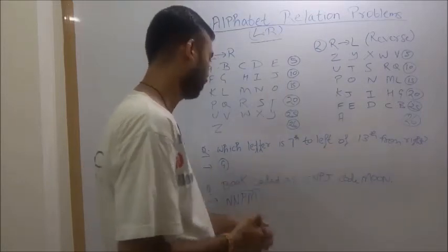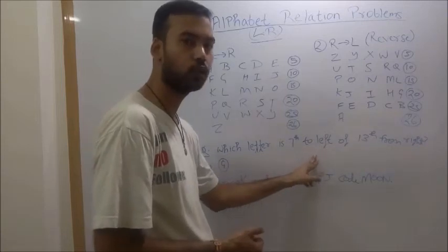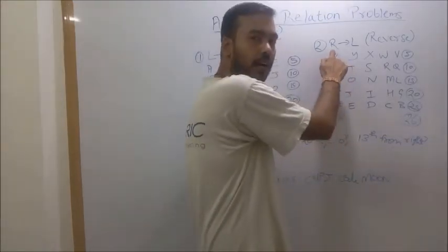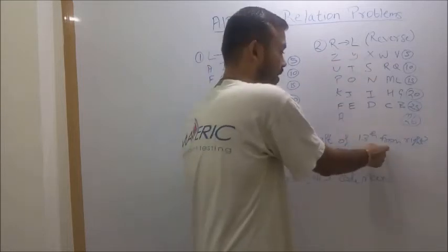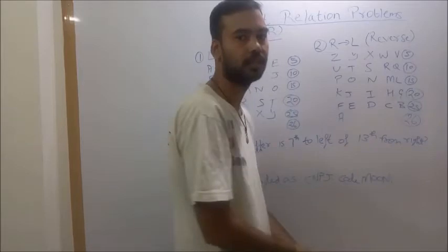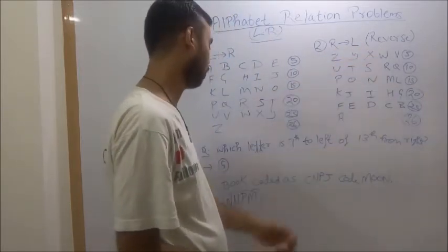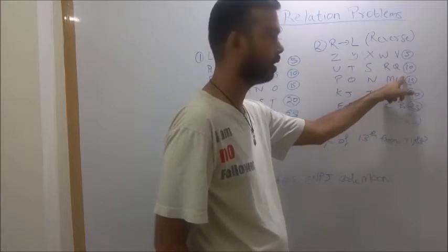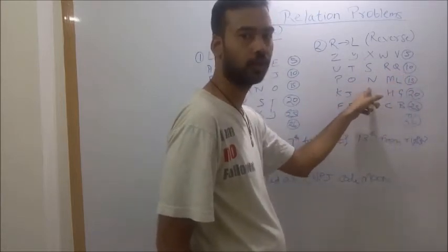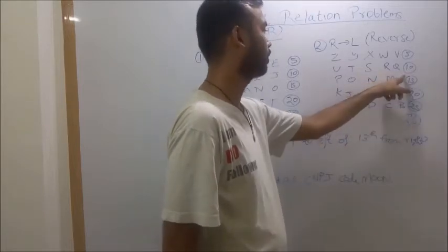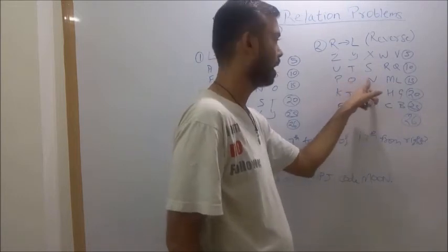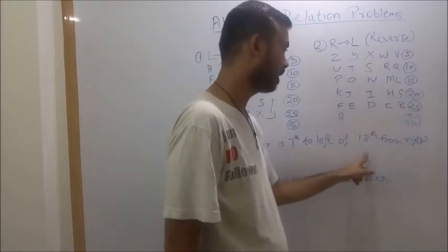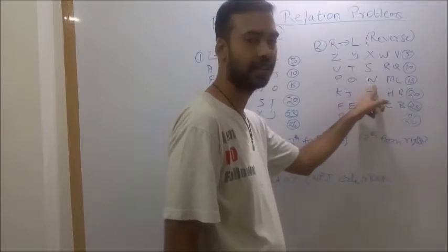First of all we need to identify which pattern it is, L to R or R to L. To identify, read it again. Which letter is 7th to left of 13th from right. Here I can see from R to L, it means from right to left. In this problem I can see the wording from right, so I need to follow this reverse pattern to solve it. Now it is saying 13th from right. I can see 5, 10. Now it is asking 13, 13th will be in this 15th row. After 10, P is 11, O is 12, N is 13.